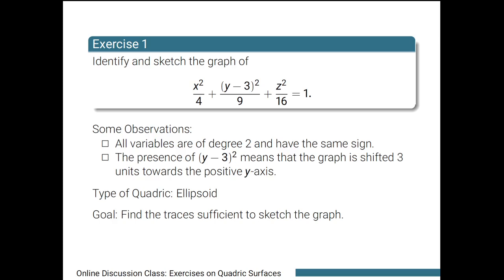Also, note that this ellipsoid is translated 3 units from the origin towards the positive y-axis due to the presence of the quantity squared.